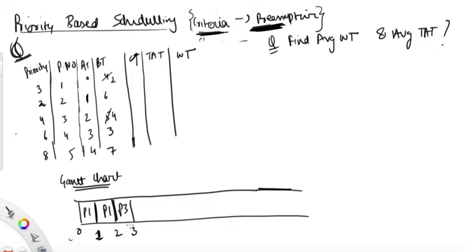Now at three units of time, any higher priority process coming? Yes — P4 is coming, it has higher priority, so execute P4 for one unit of time and reduce its burst time to two.